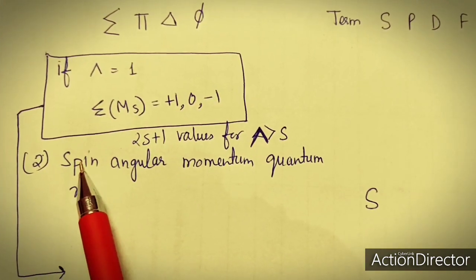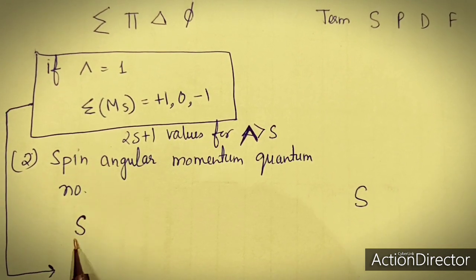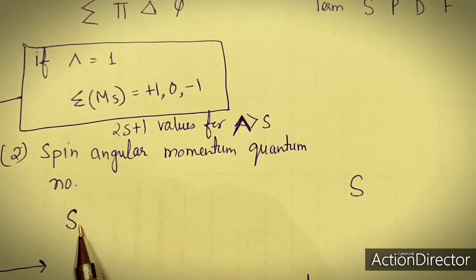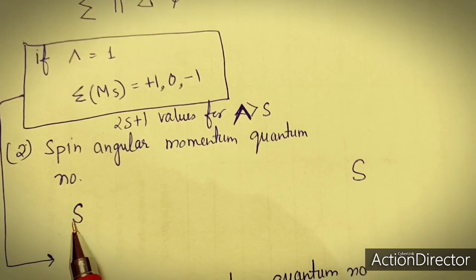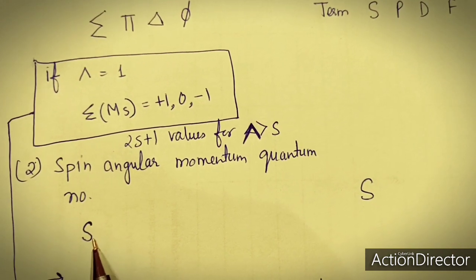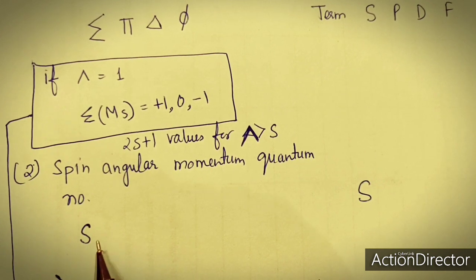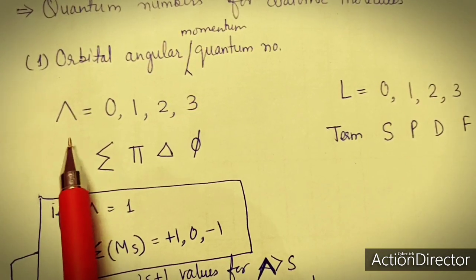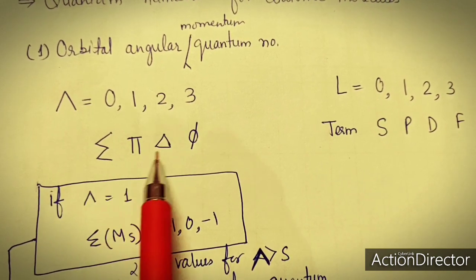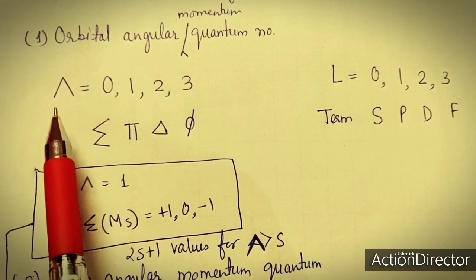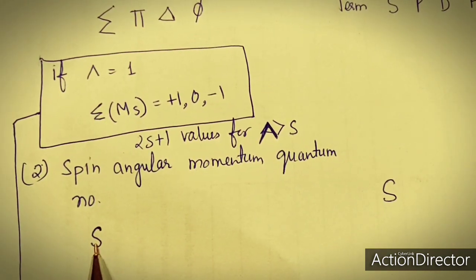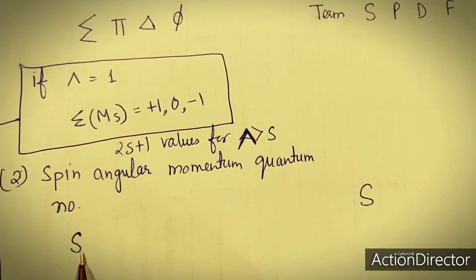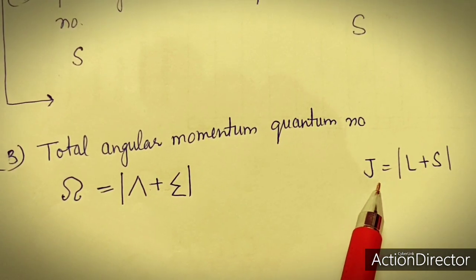The next quantum number is S, the spin angular momentum quantum number, denoted by capital S, which is the same for both atomic and diatomic terms. The value of S is helpful in calculating the multiplicity of any term, while lambda gives an idea of what the term will be.